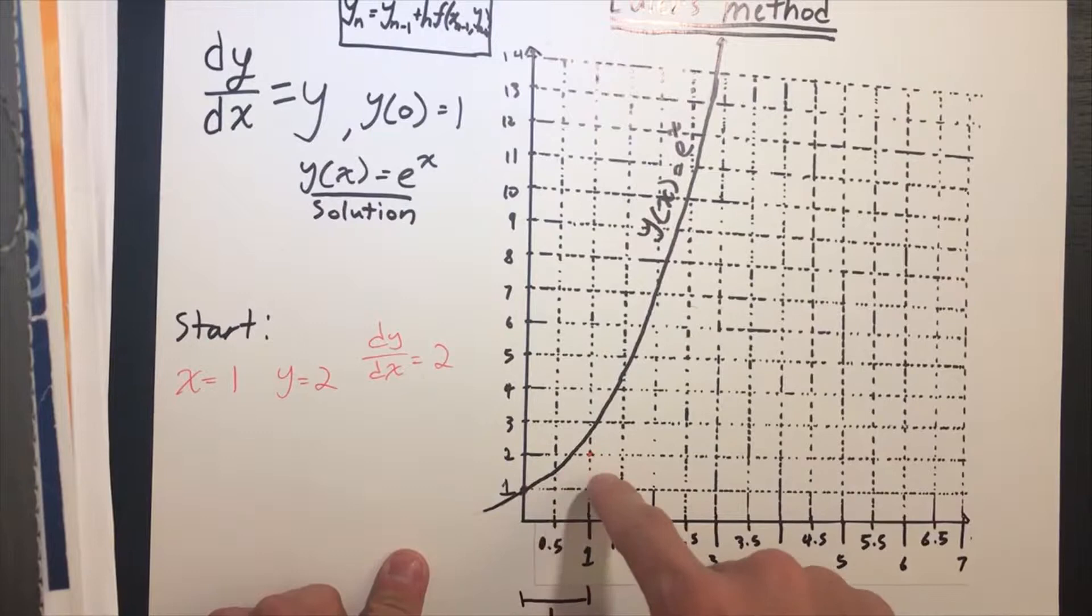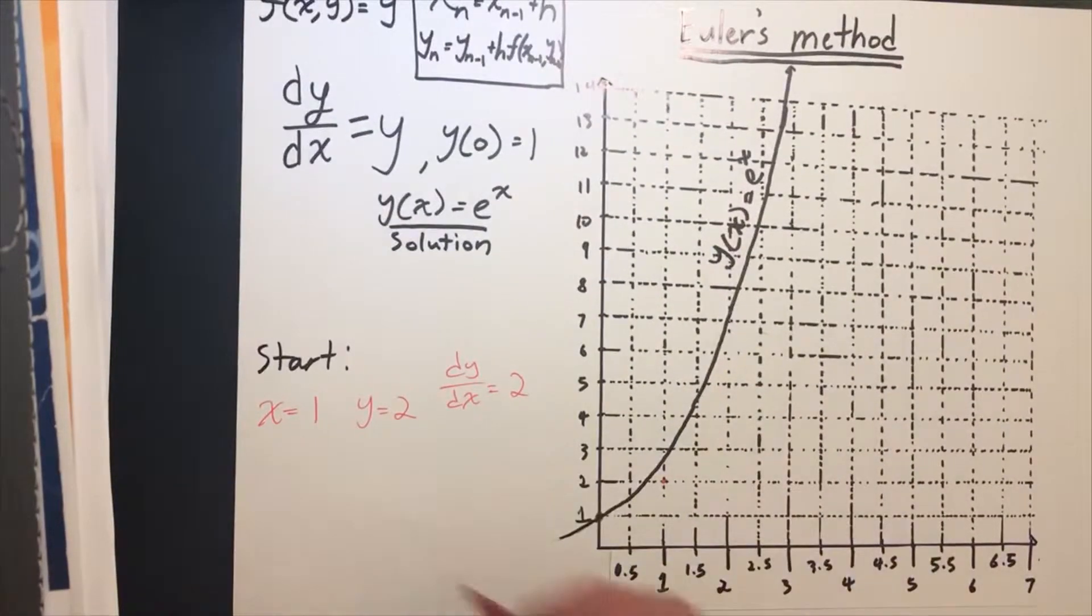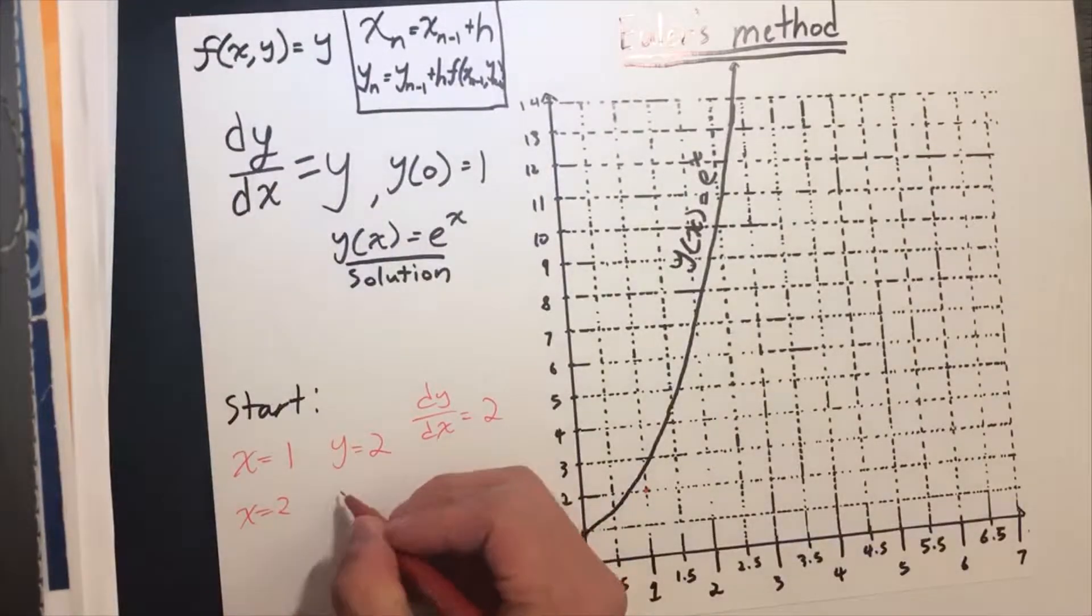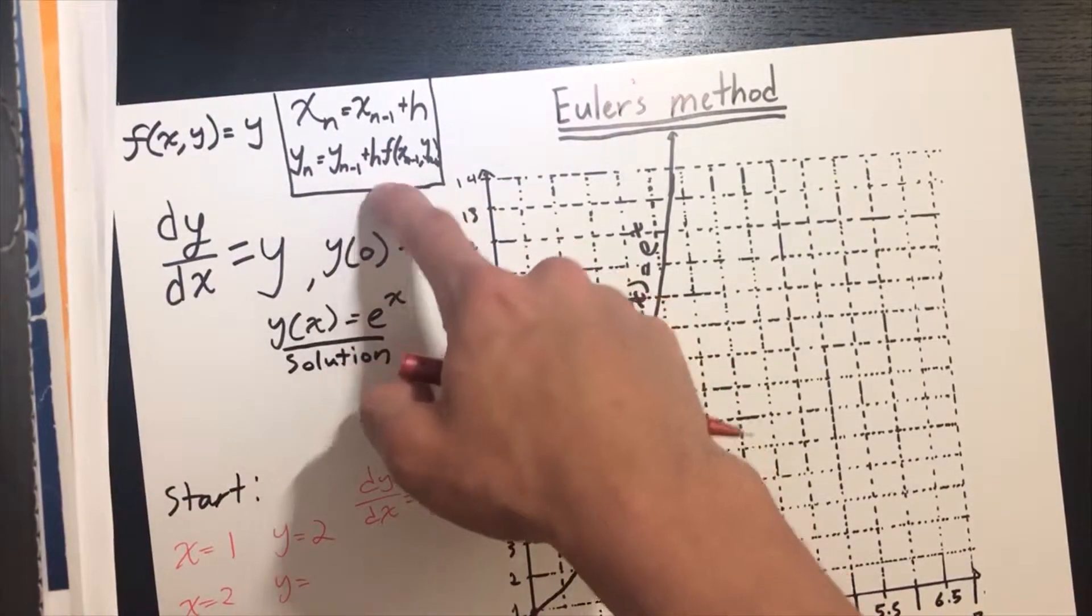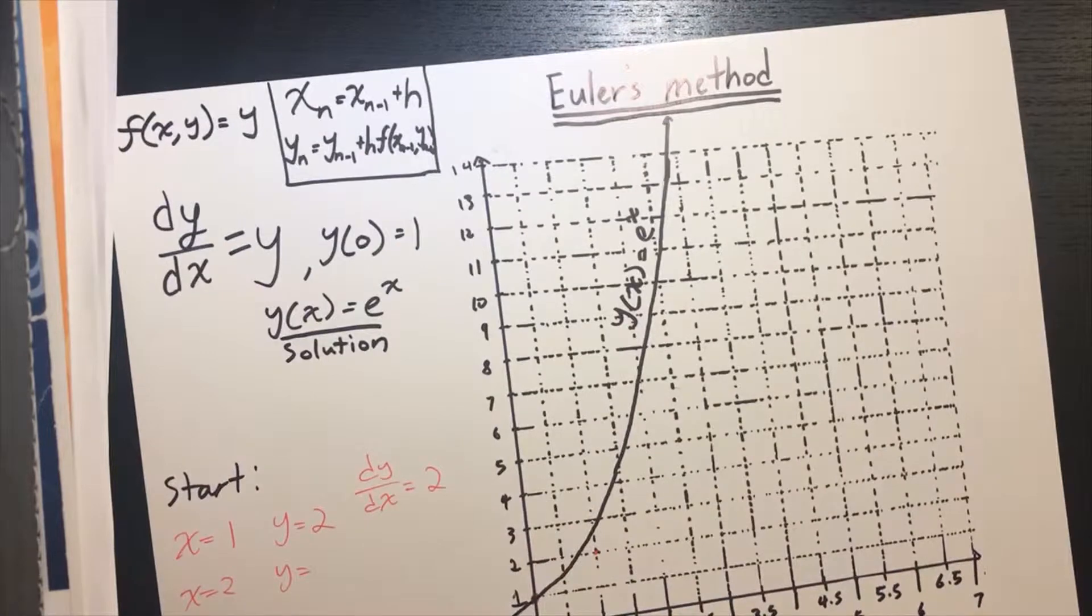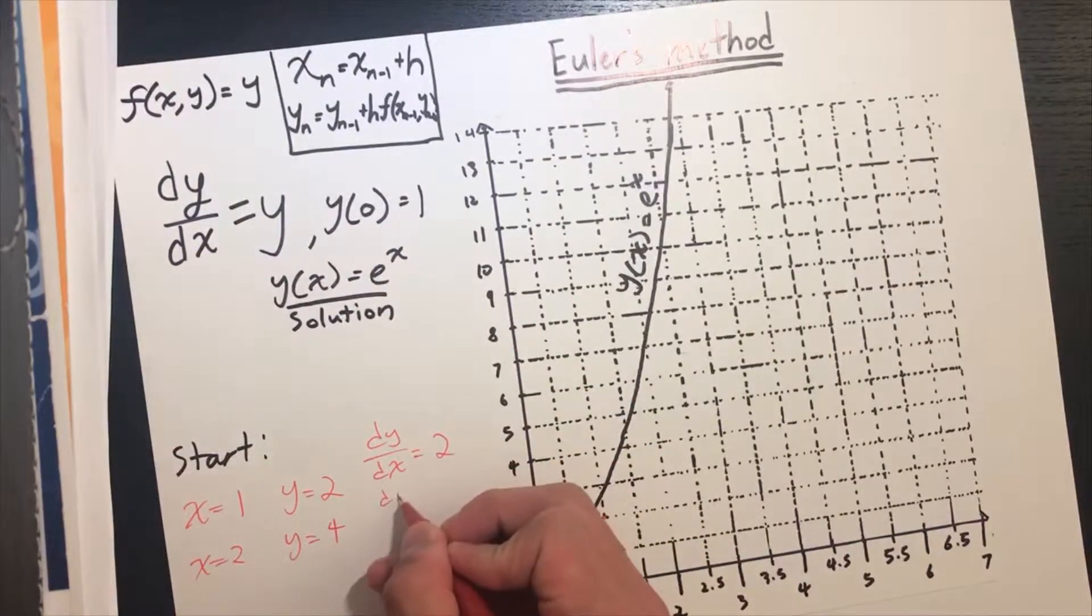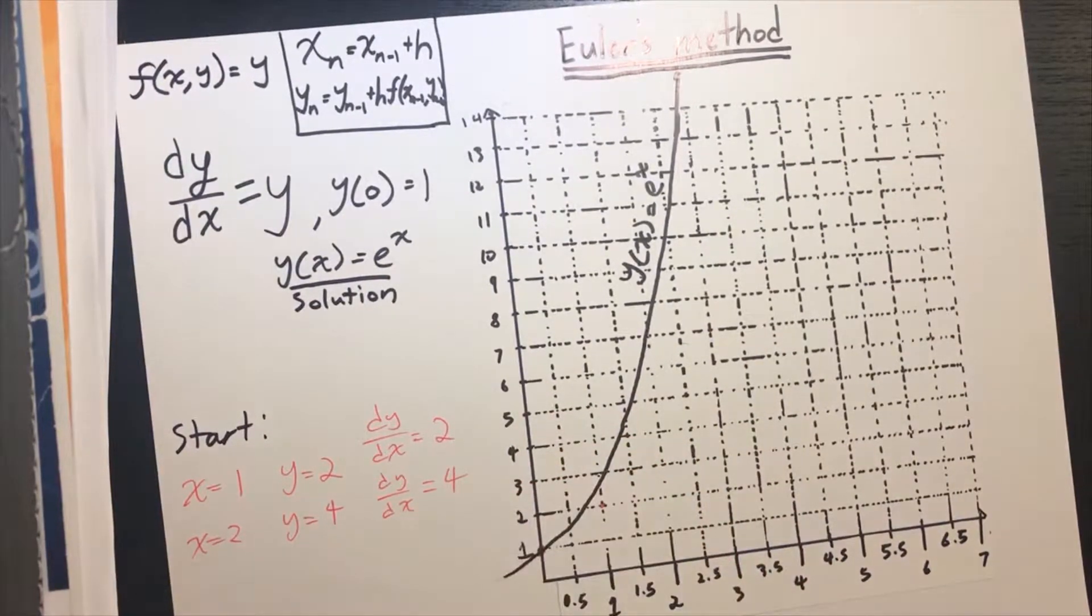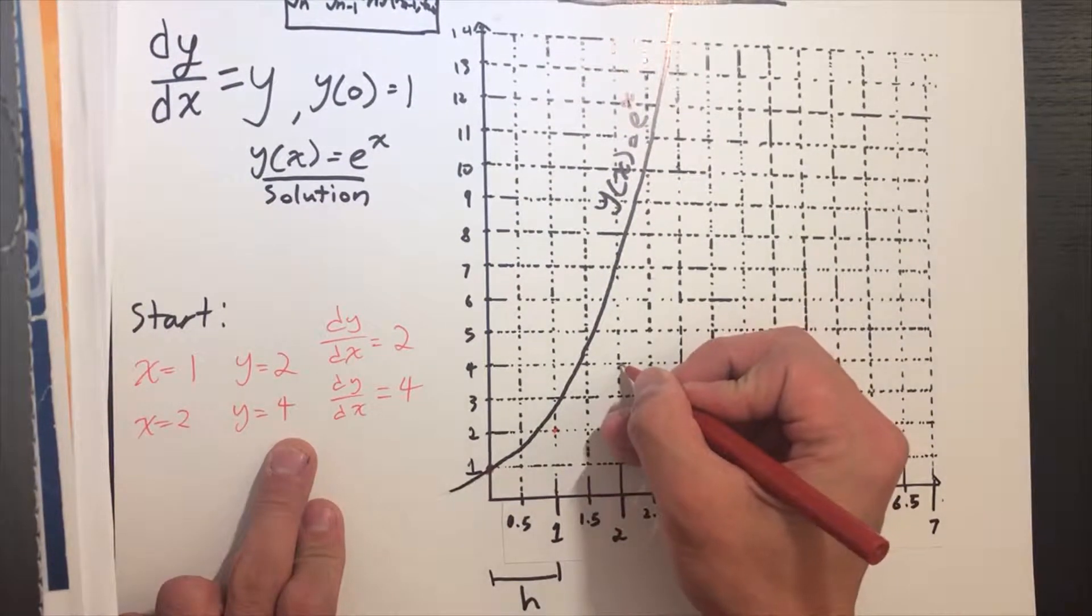The slope is now 2, so we use this to get the next point. When x = 2 (1 + h), y equals the previous y, which is 2, plus h times the slope: 2 + 1×2 = 4. So y = 4, and the slope dy/dx becomes 4. Let's plot this on the graph—when x = 2, y = 4.